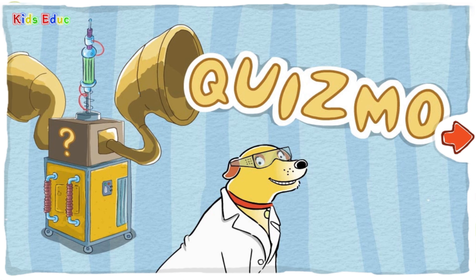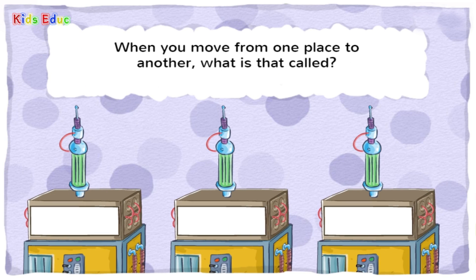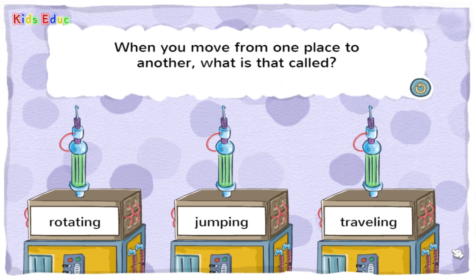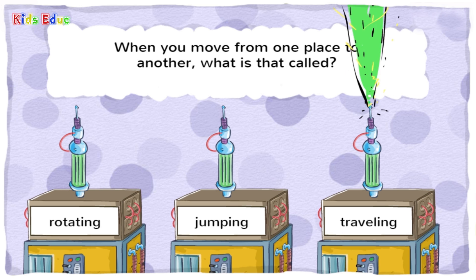Quizmo! When you move from one place to another, what is that called? Rotating. Jumping. Traveling. — Traveling. You got it! When you travel, you go from one place to another place.